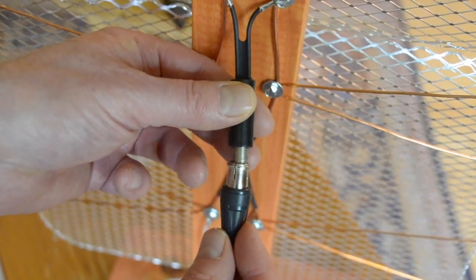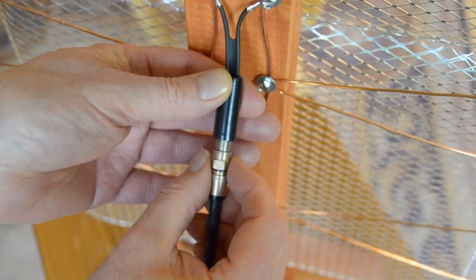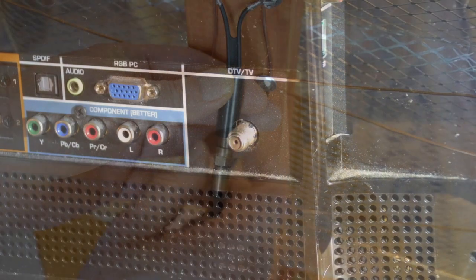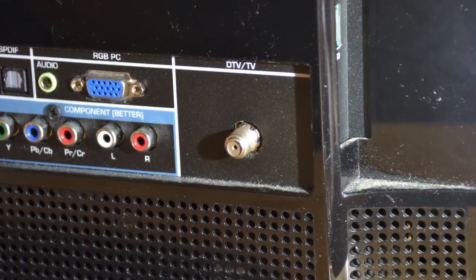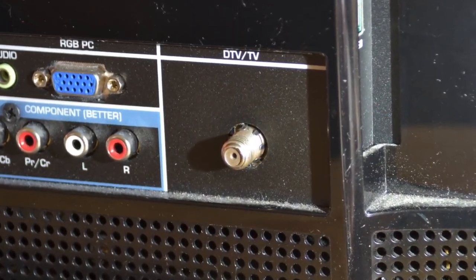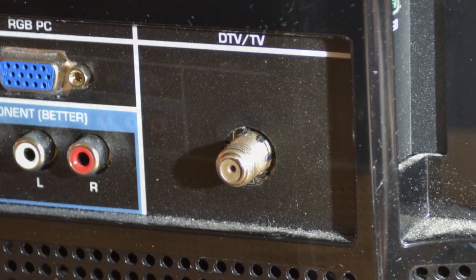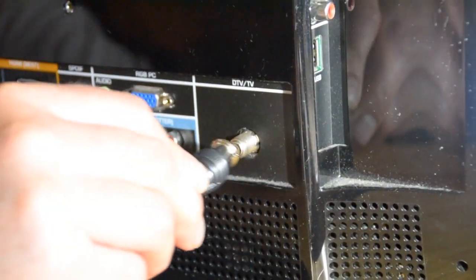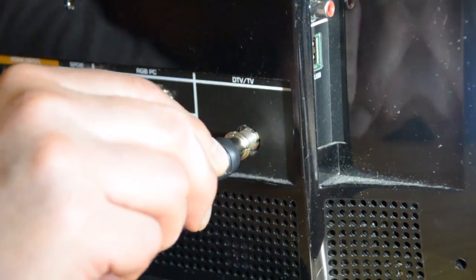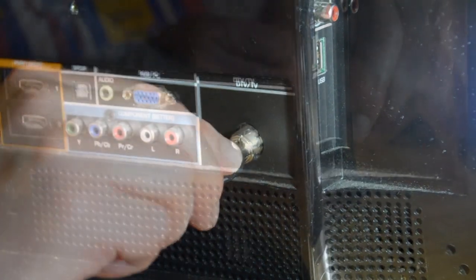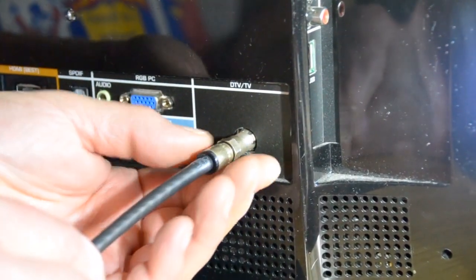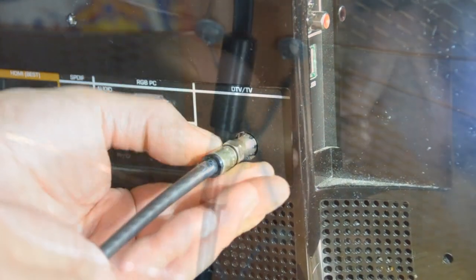Connect your antenna with the push-on connector or with the twist-on connector. The connection to your TV should be either on the side or the back of your TV. If you have a cable with a push-on connector, simply slide it on. If you have a cable with a twist-on connector, simply screw it on.